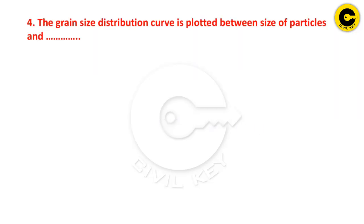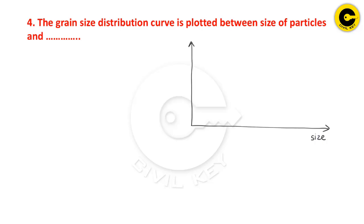The grain size distribution curve is plotted between the size of particles and percentage finer. The x-axis is the particle size and the y-axis is the percentage finer.